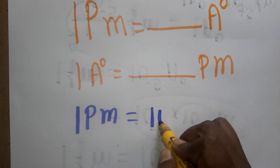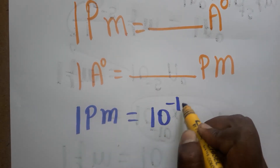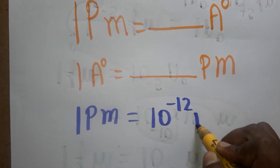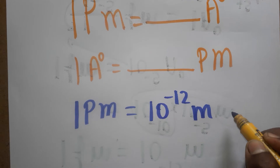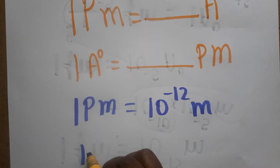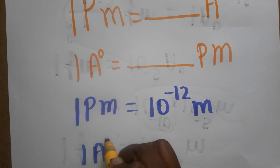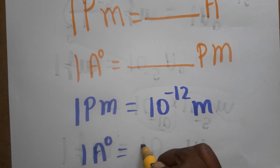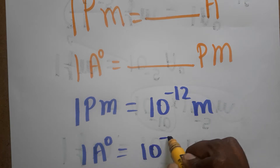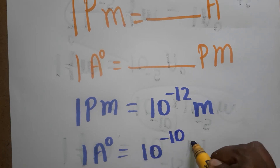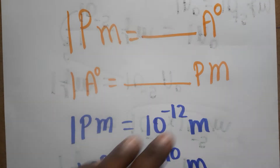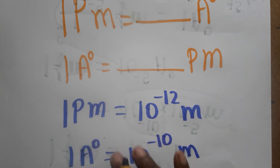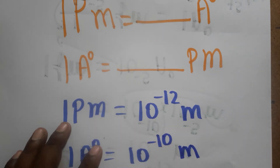One picometer is equal to 10 power minus 12 meter. One angstrom unit is equal to 10 power minus 10 meter. Now I have related both picometer and angstrom unit with the meter.